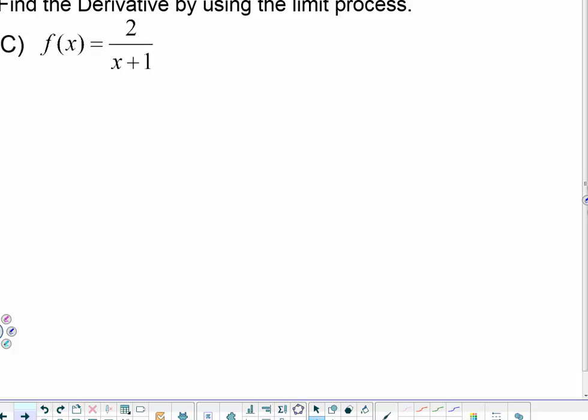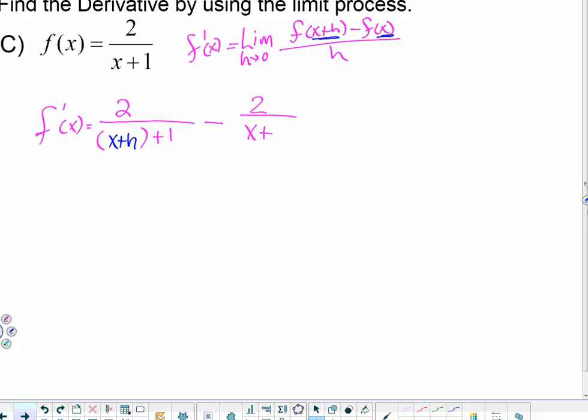I want to use the limit process to find the derivative, and recall that the limit as h goes to 0 of f of x plus h minus f of x divided by h will give us the derivative. So f prime of x is equal to, I need to evaluate this first at x plus h. The limit as h goes to 0, this will provide us with the derivative.